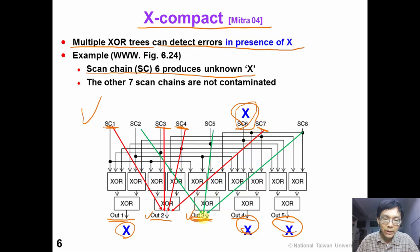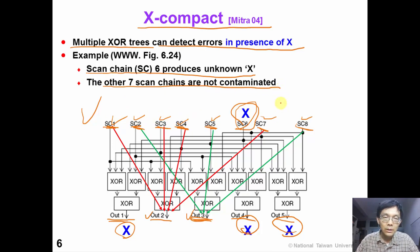When we observe output number 3, we are able to detect single errors coming in from scan chains 2, 5, and 8. In this way we can still detect the other seven scan chains — they are not contaminated. So this is a very good idea to tolerate one single X.